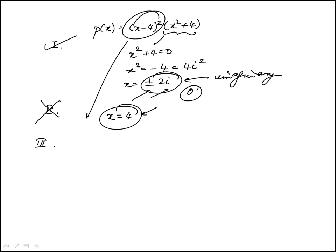Statement three says the polynomial has four complex roots counting multiplicities. The roots are 4 with a multiplicity of 2, and then 2i and -2i. So these are all four complex roots.